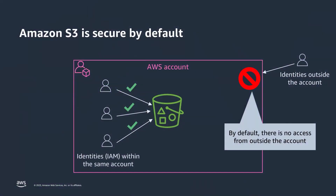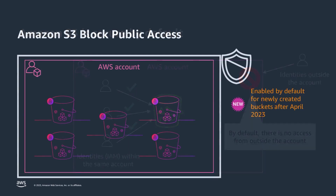By default, your S3 buckets are private. Identities outside your AWS account have no access to your S3 resources. In order to prevent incorrect access configurations making your buckets publicly accessible, we recommend enabling S3 Block Public Access on your AWS account. Block Public Access ensures there is no public access to any object, and it will be enabled by default for newly created buckets after April 2023.